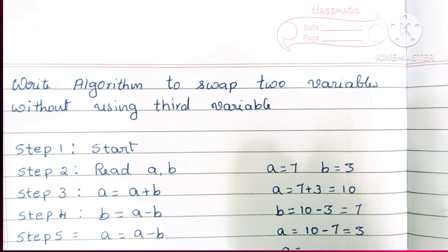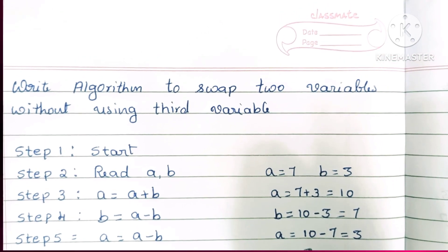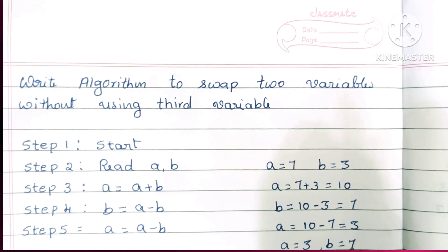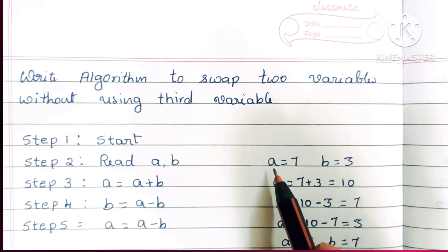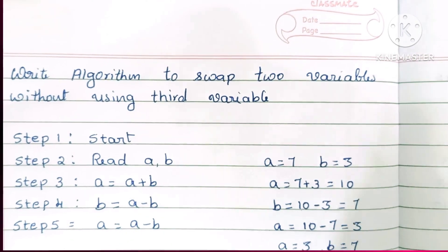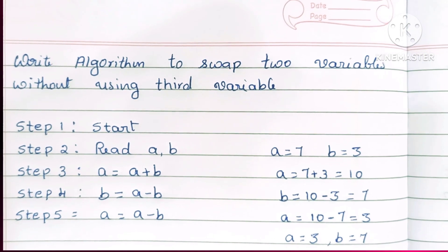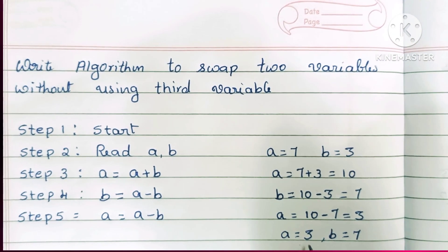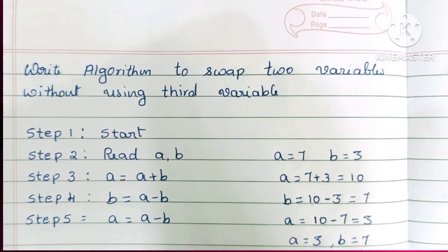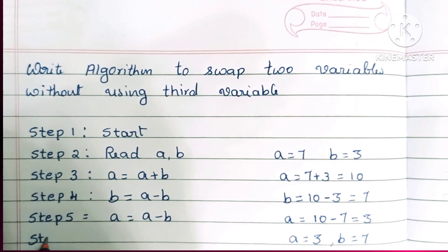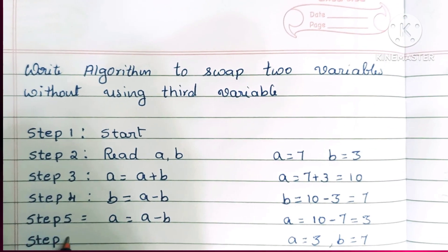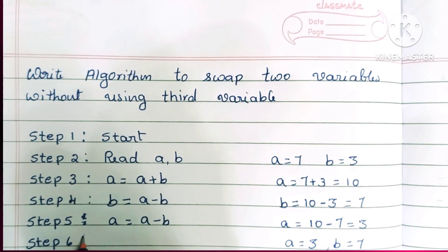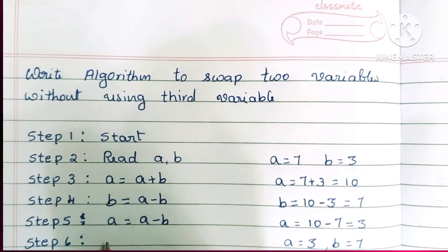We have successfully swapped the two variables without using a third variable. The value of a is now 3 and the value of b is now 7, which is exactly what we wanted.